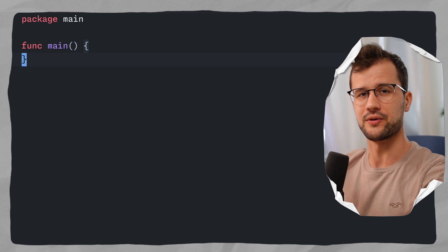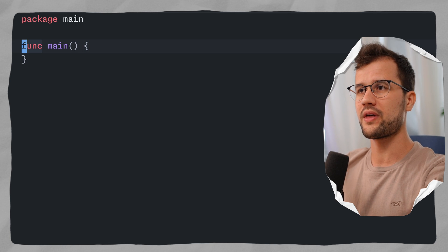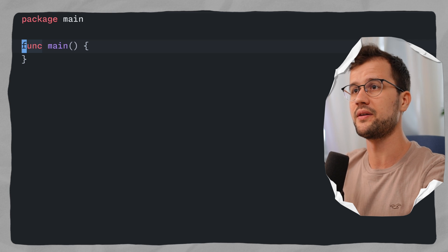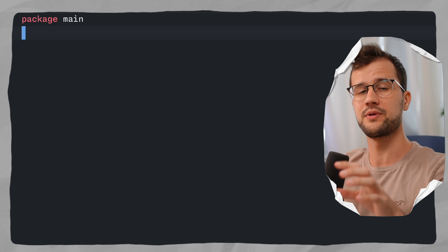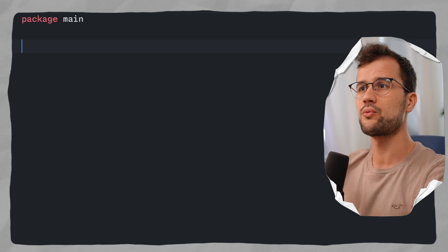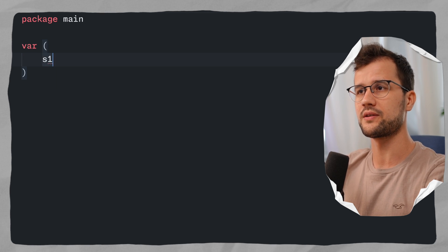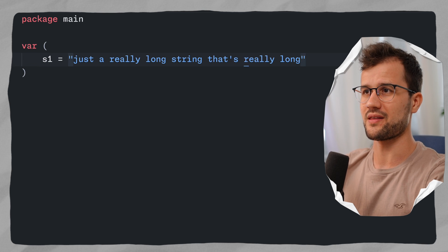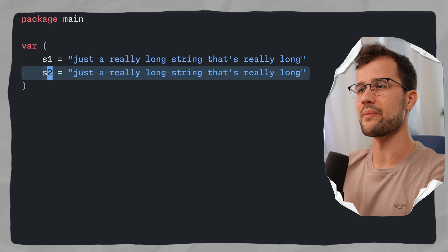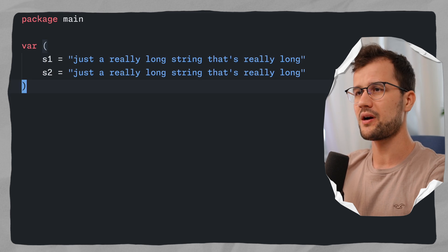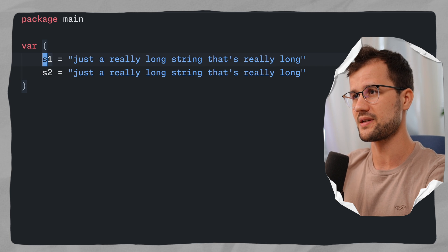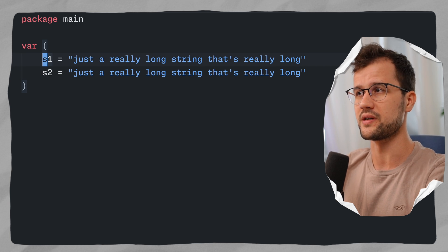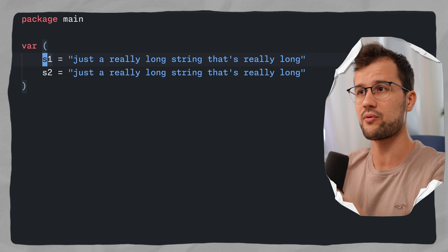To use benchmarks in Golang, we can make use of the testing package. For that we don't need the main.go file — we actually need the main_test.go file. We declare the package and then make use of the testing module. We declare two variables, S1 and S2, inserting a really long string and copying it for S2 — obviously these two variables are the same. Then we create two benchmarks: one using the default comparison, and another using the unique module to see the performance difference when comparing these two strings.